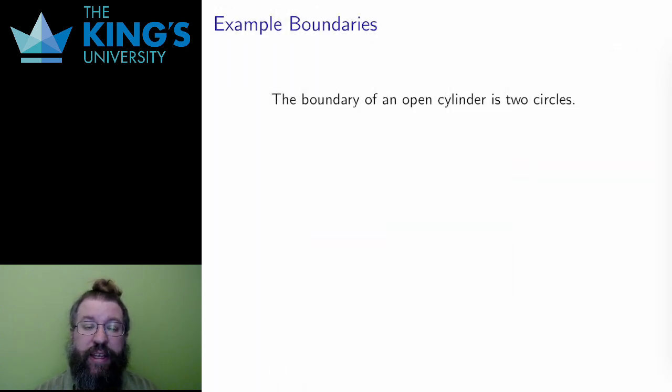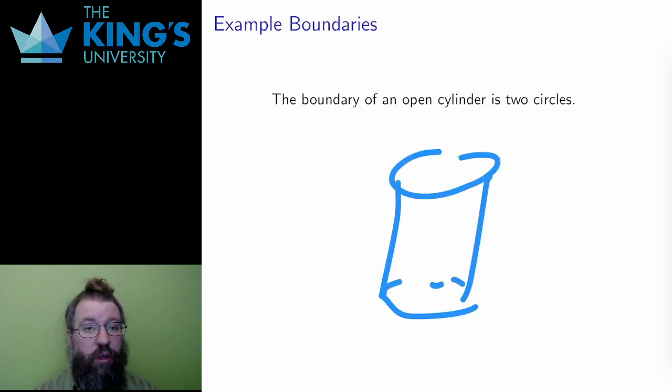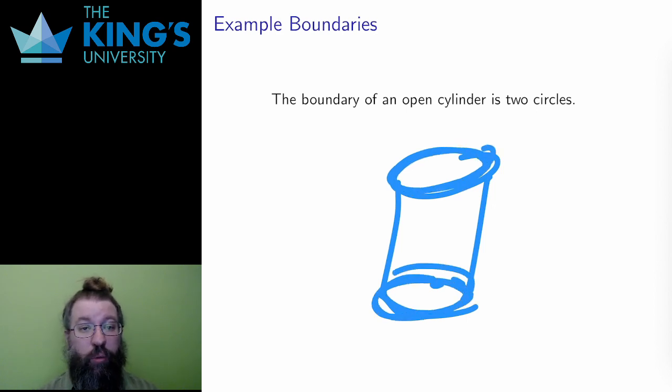In R3, if I take a finite height cylinder, but I do not include the top or bottom disks, then what is the boundary? Where does the cylinder stop? It ends at the two circles, one at the top and one at the bottom. So the boundary is these two circles.